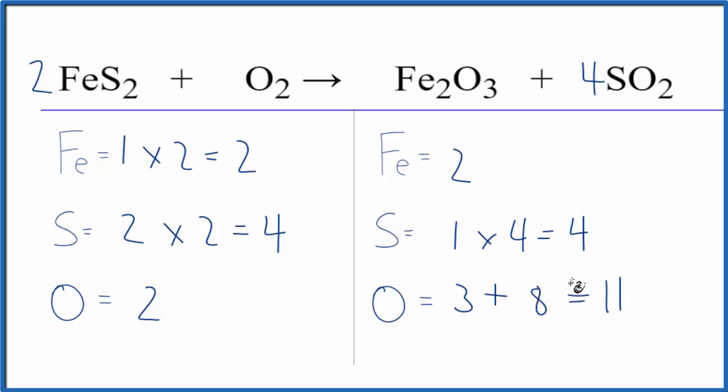So there are two things you could do here. One, you could double this Fe2O3. That would make this an even number. Then you'd have to update a lot of things, but that would work. And the other way, and it would give the same answer in the end, is we could say 2 times some number equals 11. 2 times 11 over 2. That would equal 11. So we could put our coefficient here, 11 over 2. In this equation, it's balanced.